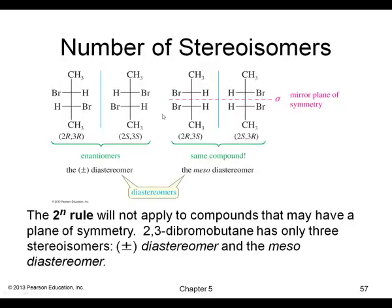The way to count the number of stereoisomers is 2^n, where n is the number of chiral carbons. So with two chiral carbons, 2² = 4 stereoisomers total. But two of them are meso — they have internal mirror planes and are the same — so we subtract one, giving a total of three stereoisomers.